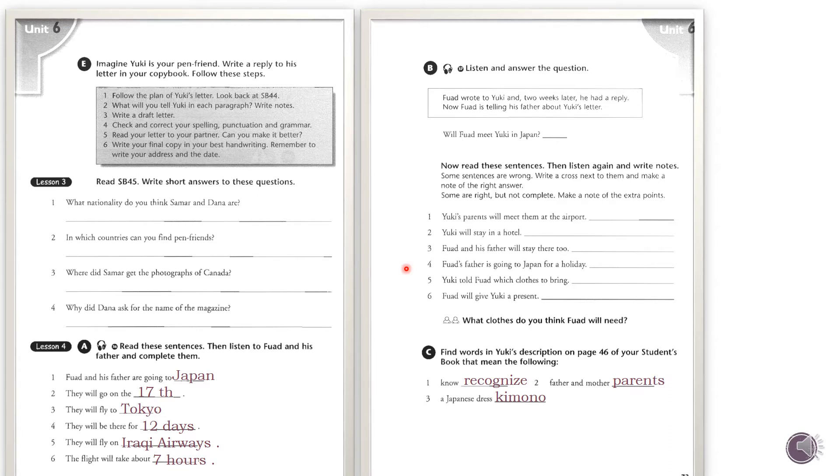Let's listen to Yuki's letter, Track 37. Fouad wrote to Yuki and two weeks later he had a reply. Now Fouad is telling his father about Yuki's letter. Dad, I got a letter from Yuki this morning. What does he say? He says that he and his family will be in Tokyo when we are there. Isn't that fantastic? Yes, it is. And he says that his father and his mother will meet us at Tokyo Airport, and he'll be at the airport too.